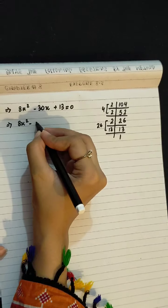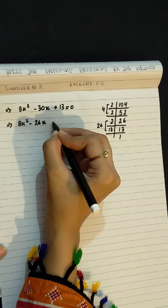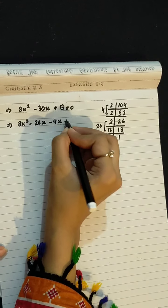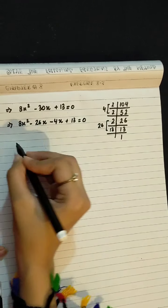8x square minus 26x minus 4x plus 13 equals to 0.